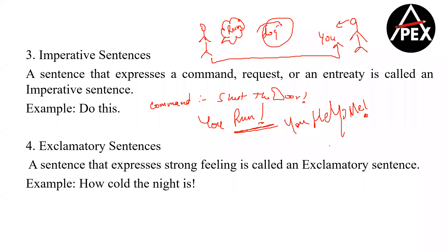Durga and Saumya are asking the meaning of the word 'entreaty' — entreaty is a formal word for humble request. 'You help me' is a proper sentence. But 90% of the time in these days we are not using that complete sentence at all. And why is it okay for us to leave out 'you'?